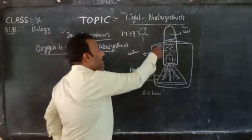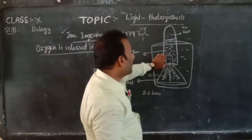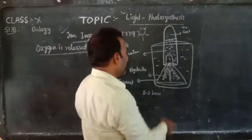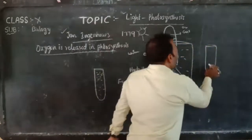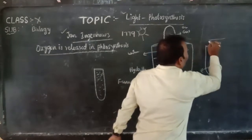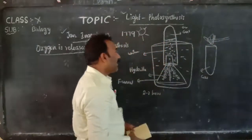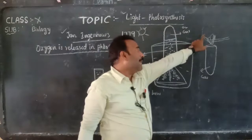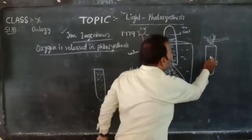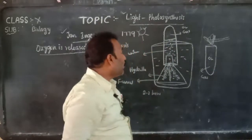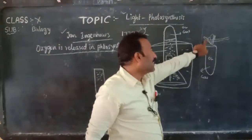When sufficient gas was collected in the test tube, the test tube was lifted from the funnel by closing its mouth with the thumb. Then a burning splinter was kept at the mouth of the test tube. The splinter glowed brightly and brilliantly, because the gas escaping from the test tube was oxygen. By this, we understood that the escaping gas is oxygen.